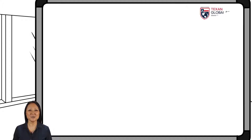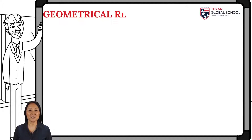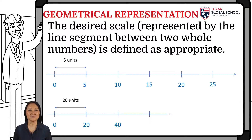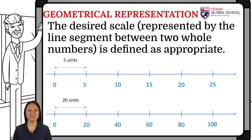In this figure we can see two number lines. The first has a scale of 5 units between each segment. That is, the numbers are 0, 5, 10, 15, 20, etc.